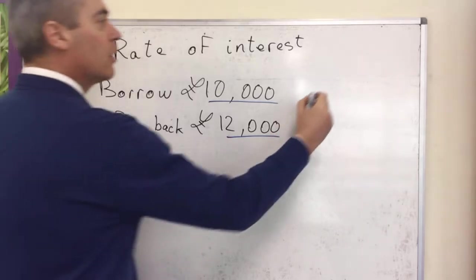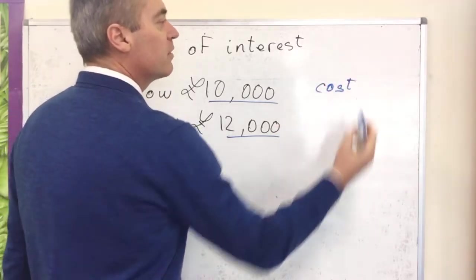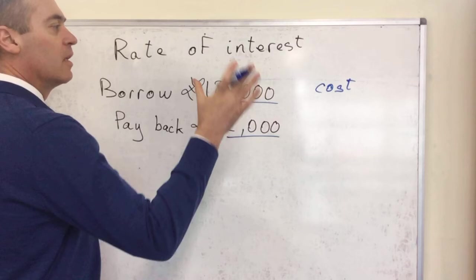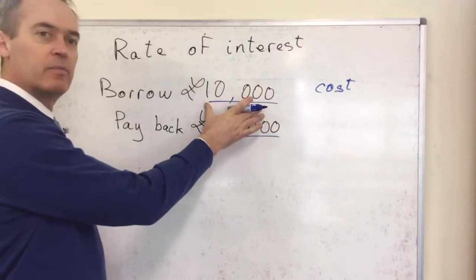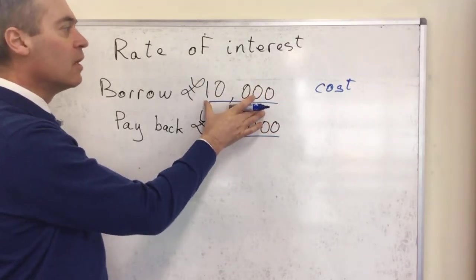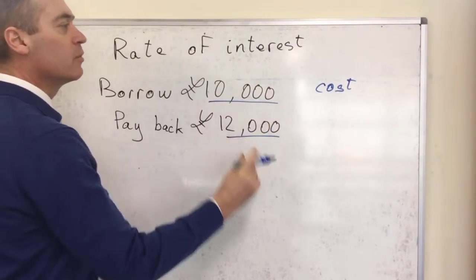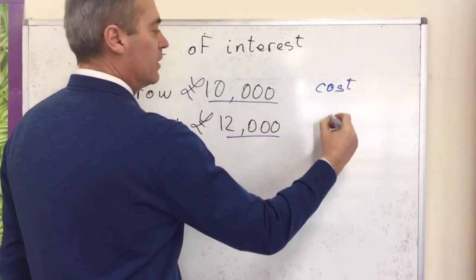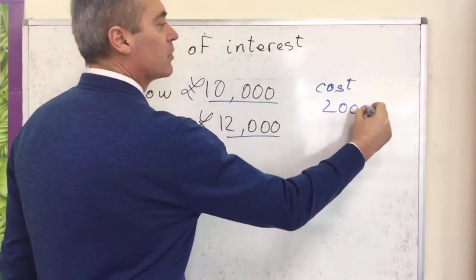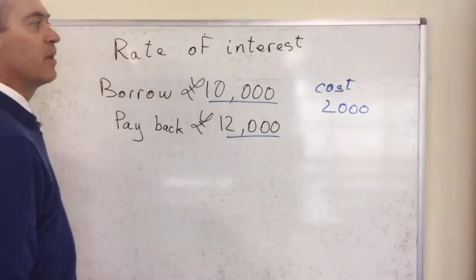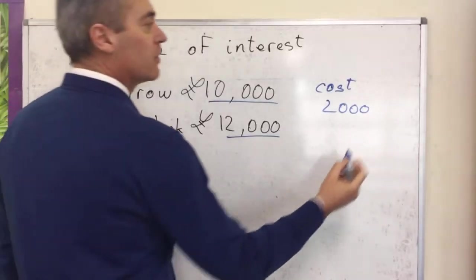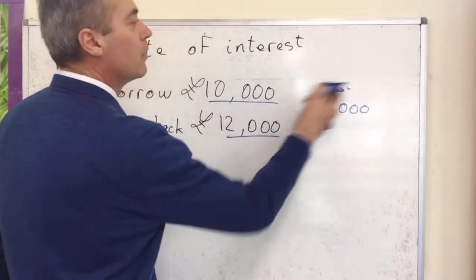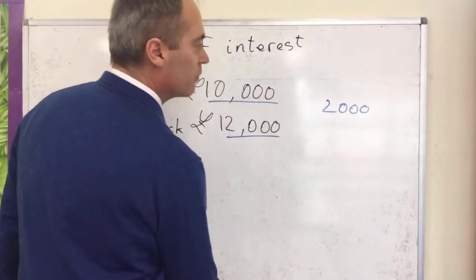So the cost of using the money, the cost of benefiting from this inflow of cash of £10,000, let's say at the start of the year — you are going to pay it back plus interest, and the interest will be the difference. So that's the total interest of £2,000.